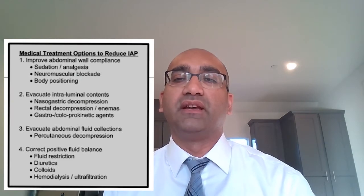Once you have diagnosed the patient to have ACS, you can take the following measures before taking them to the operating room for decompressive laparotomy, which is the definitive treatment. In the operating room, if a previous midline laparotomy incision exists, you open it; if not, you make a generous midline laparotomy incision. Make sure you do not close the fascia, and apply a temporary abdominal closure using an Aptera wound vac or another suitable covering.